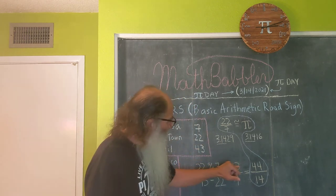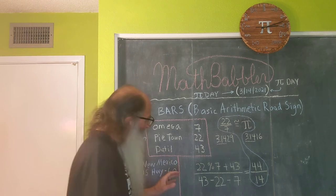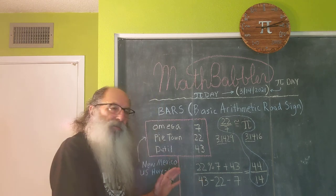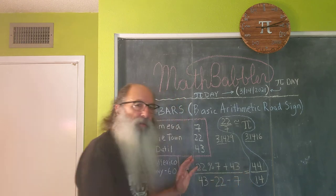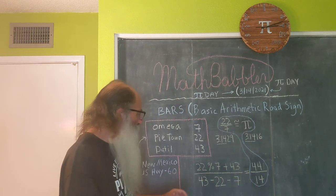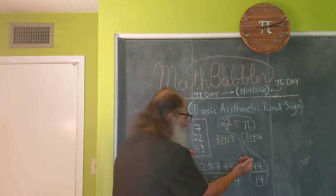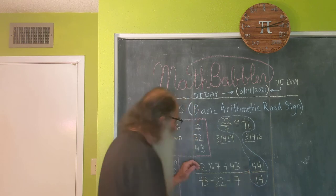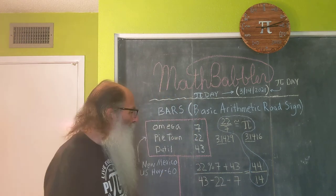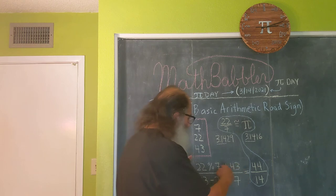The numerator — I should point out that whenever you write a horizontal fraction, this bar plays the role of a grouping mechanism, meaning you evaluate the expression in the top first, then you evaluate the expression in the bottom, and then you divide the top by the bottom. So let's evaluate the expression in the top.